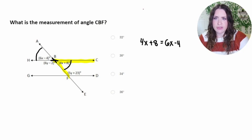And then I can solve that equation for x. So I'm going to start by combining like terms and get the x's on the same side. So I'm going to subtract 4x from both sides of the equation. And that's going to leave me with 8 is equal to 2x minus 4. Then I'm going to get that 4 on the other side. The opposite of minus 4 is plus 4. So I'm going to add that over. And I'm going to get 12 is equal to 2x.